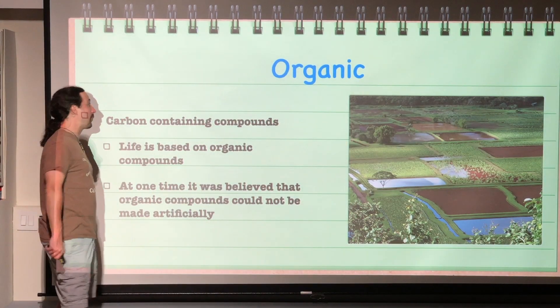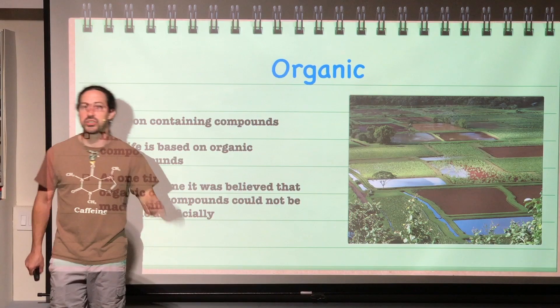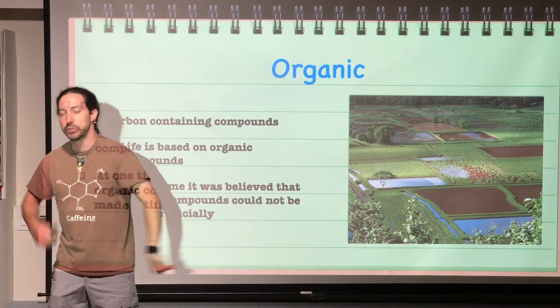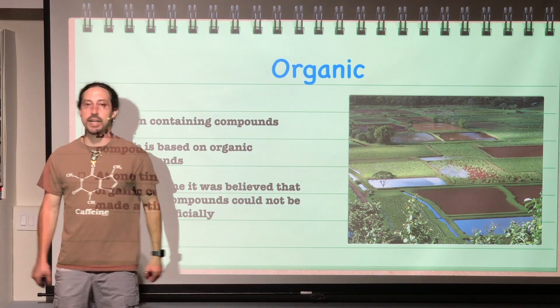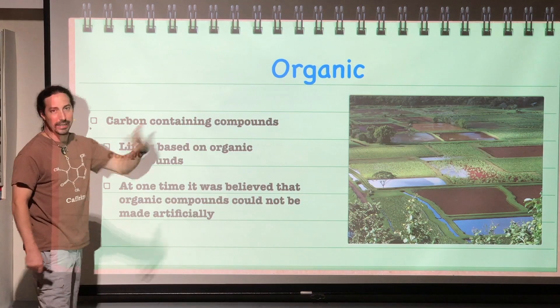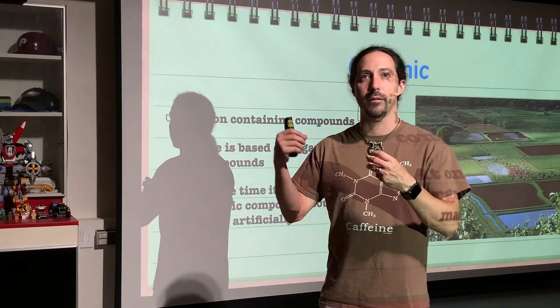So first off, what is organic? What's it mean? Well, very simple: it means it contains carbon. Period. Organic chemistry is a study of molecules that contain carbon. So if a molecule contains carbon, it's organic. At one time they had this belief out there that organic molecules could only come from something that was alive, that we couldn't artificially make an organic compound in the lab.